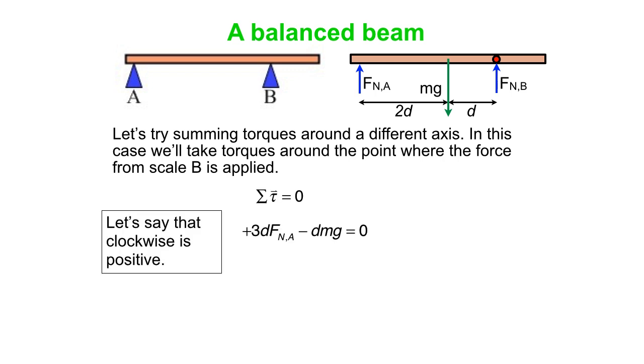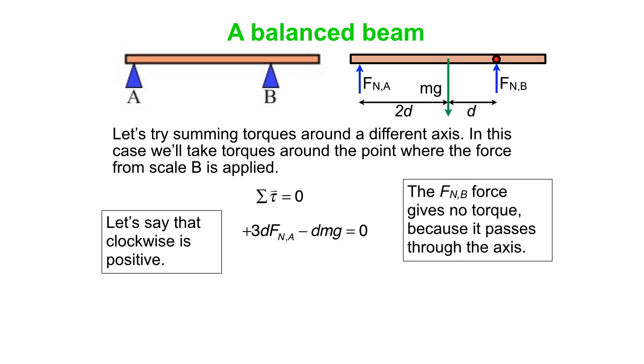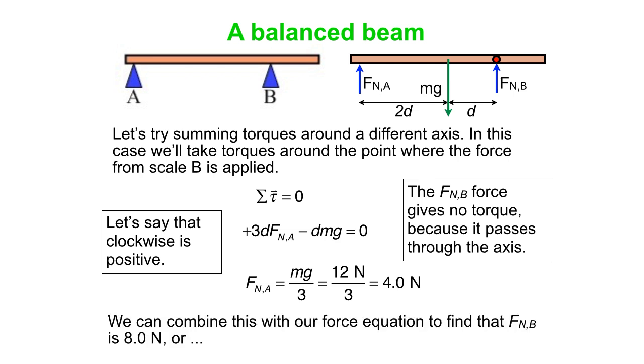So again, clockwise is positive. Now we're 3D away from B. Scale A is 3D away, minus DMG. Again, the Ds cancel. So this turns out, and again, FnB is no torque because it passes through the axis we're choosing here. And FnA works out to a number, right? 4 Newtons. We couldn't solve for FnA or FnB from the force equation, but from the torque equation we can get it. So that force is 4 Newtons. Now we can combine that with our force equation to find that FnB is 8 Newtons, because the sum of them have to add to 12.